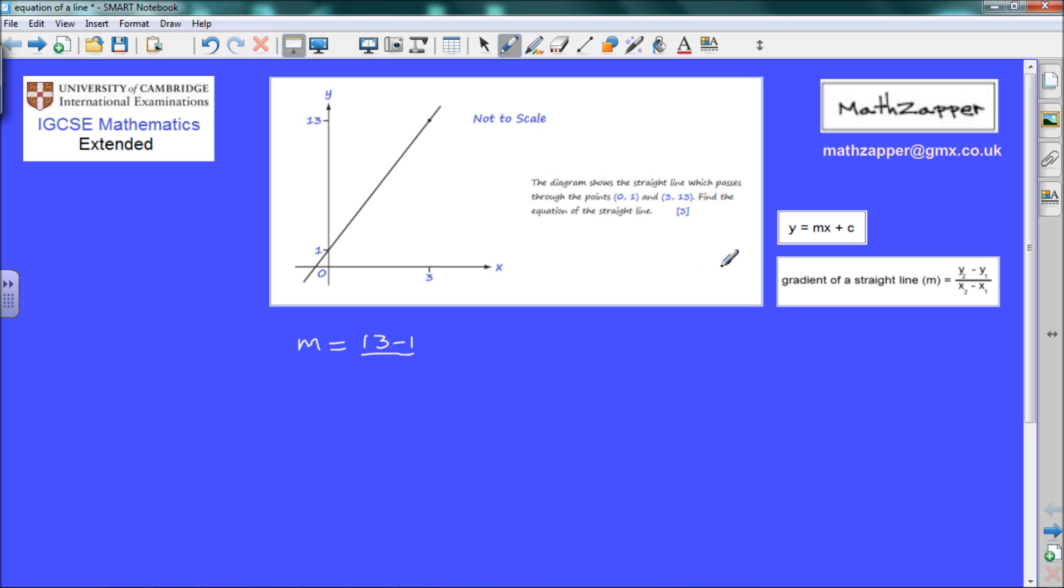all divided by second value of x minus first value of x, 3 minus 0, giving 12 divided by 3.